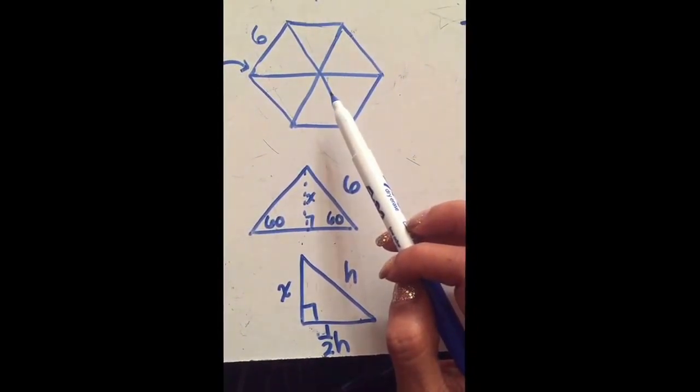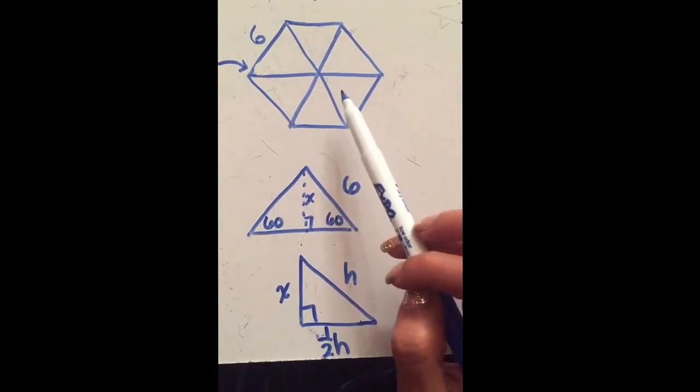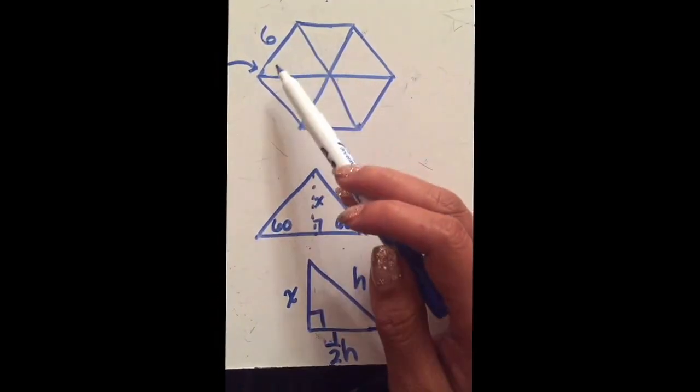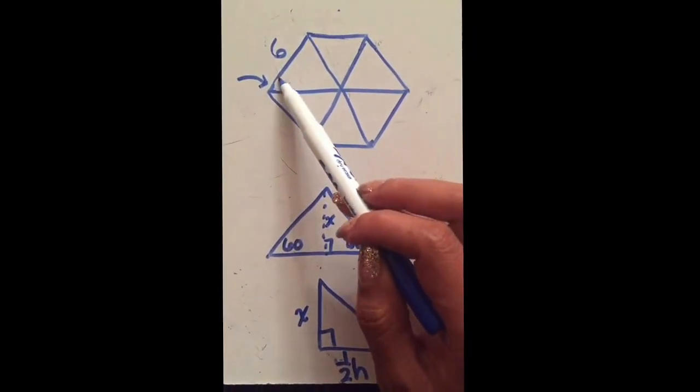Each of my little pattern blocks were equilateral triangles, and each equilateral triangle had an angle of 60 degrees. In this case I know every side is the same, so in my hexagon every outside is 6.